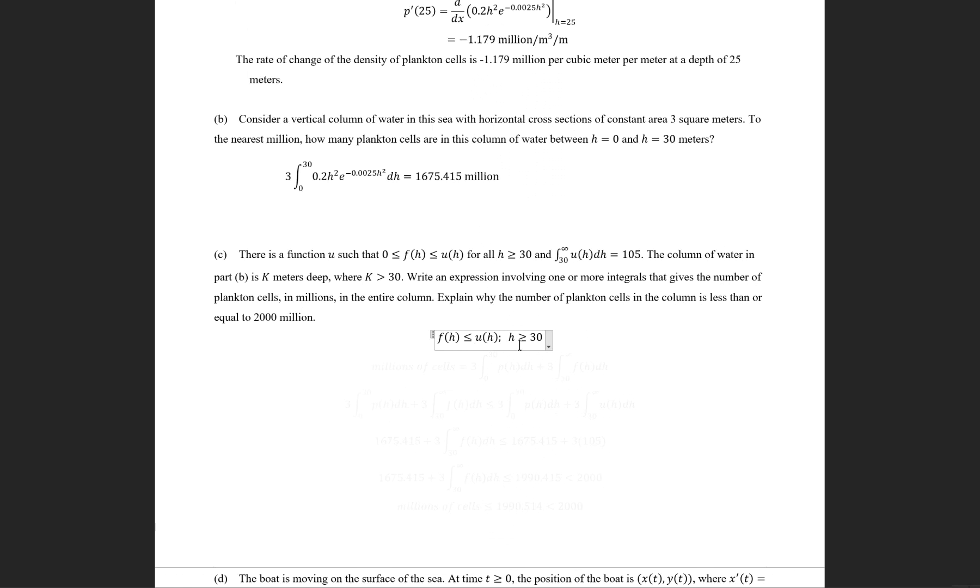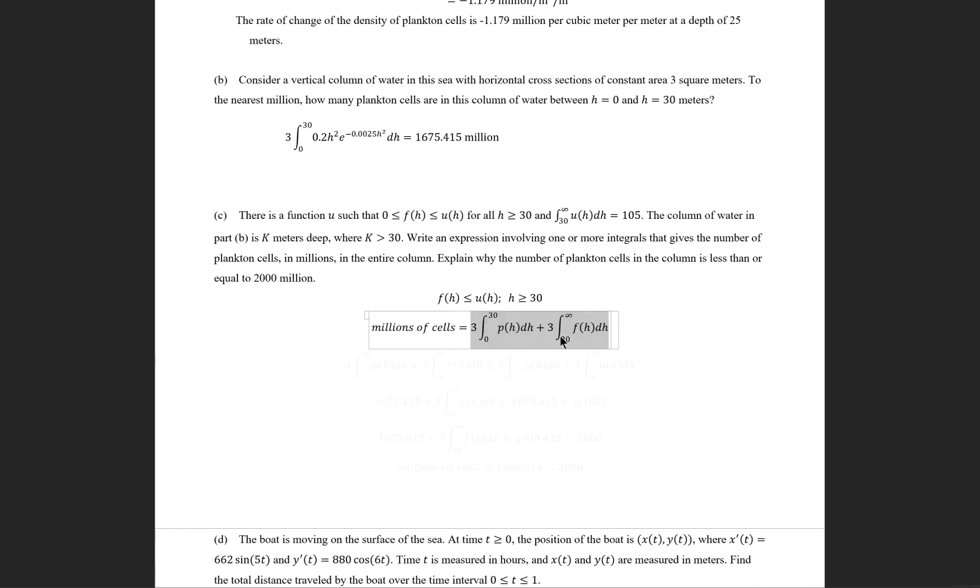beyond the 0 to 30 limit is less than U of H after H is greater than or equals to 30 for all H greater than or equal to 30. So, millions of cells, this amount is given by 0 to 30 of pH dH plus 3 times 30 to infinity F h dH.